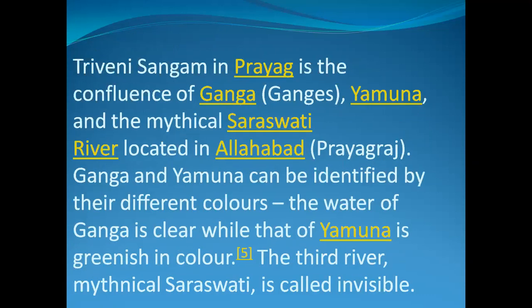The Triveni Sangam in Prayagraj, also known as Allahabad, is the confluence of the Ganga, Yamuna and the mythical river Saraswati. A confluence occurs when two or more flowing bodies of water join together to form a single channel. Ganga and Yamuna can be identified by their different colors — the water of Ganga is clear, while that of Yamuna is greenish in color. The third river, the mythical Saraswati, is called invisible.